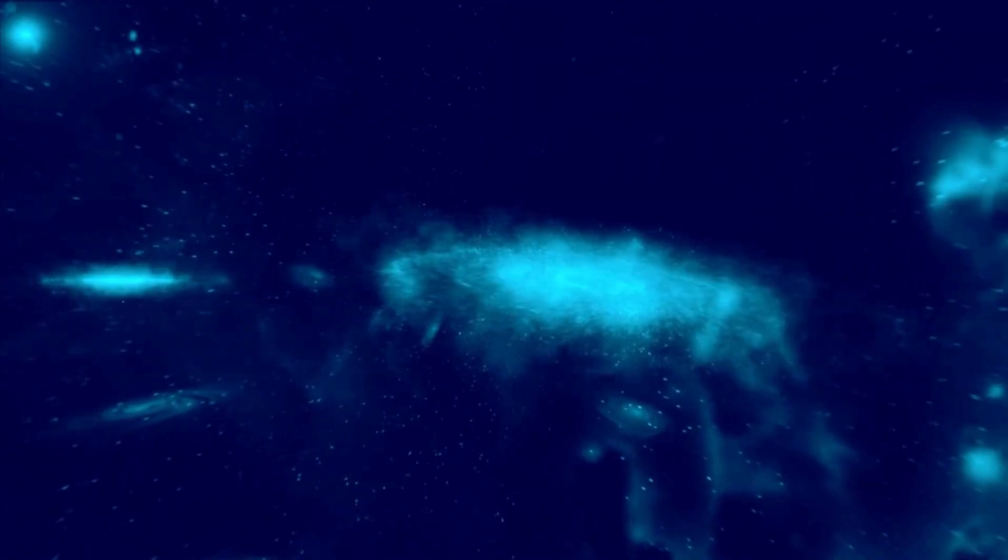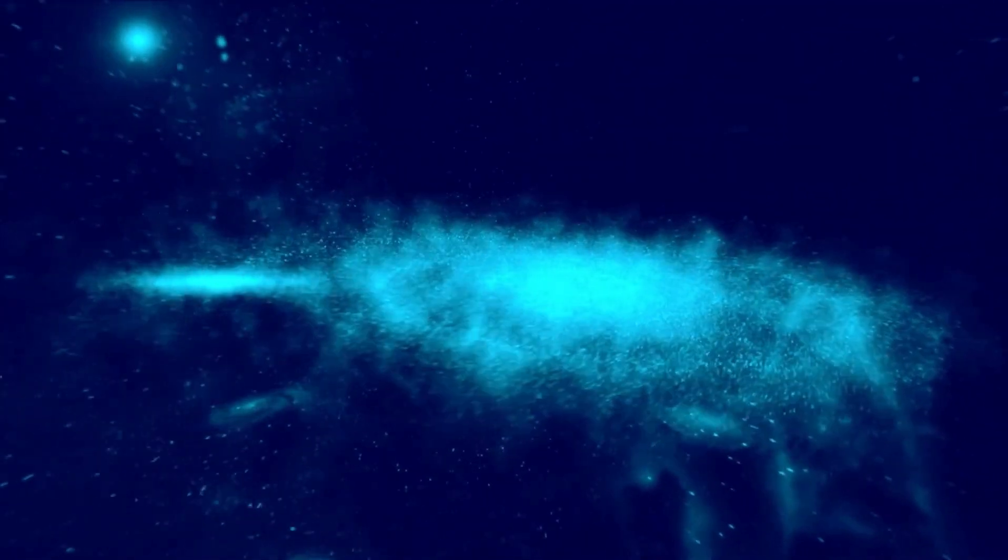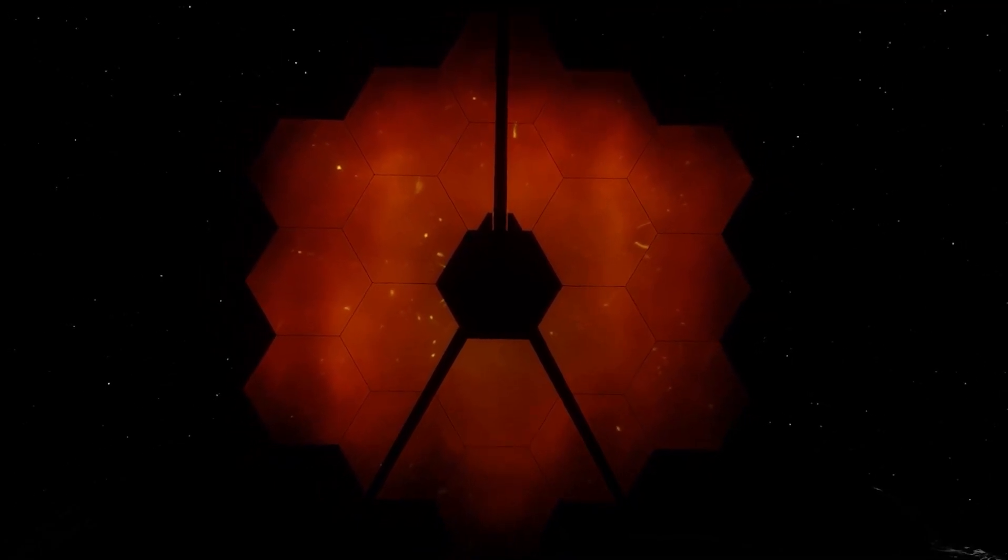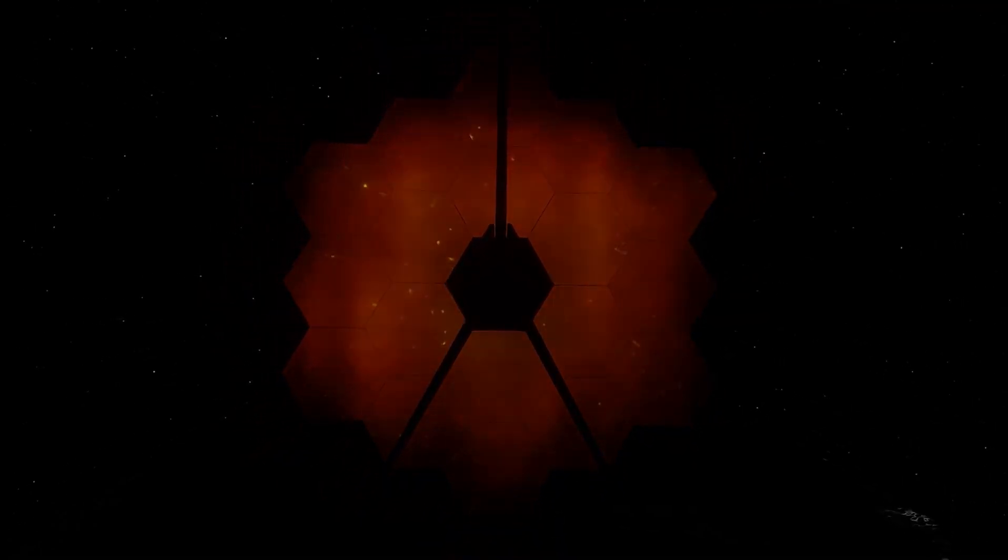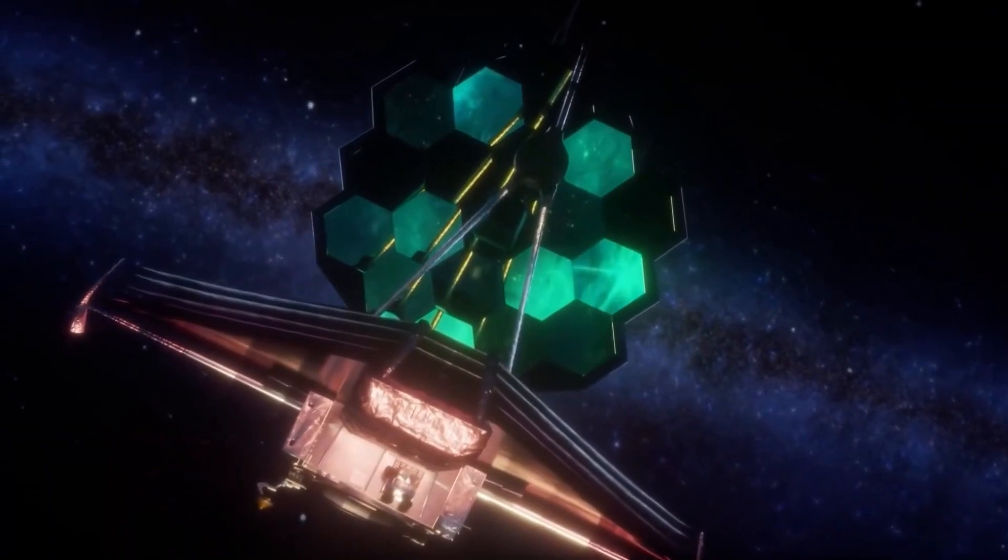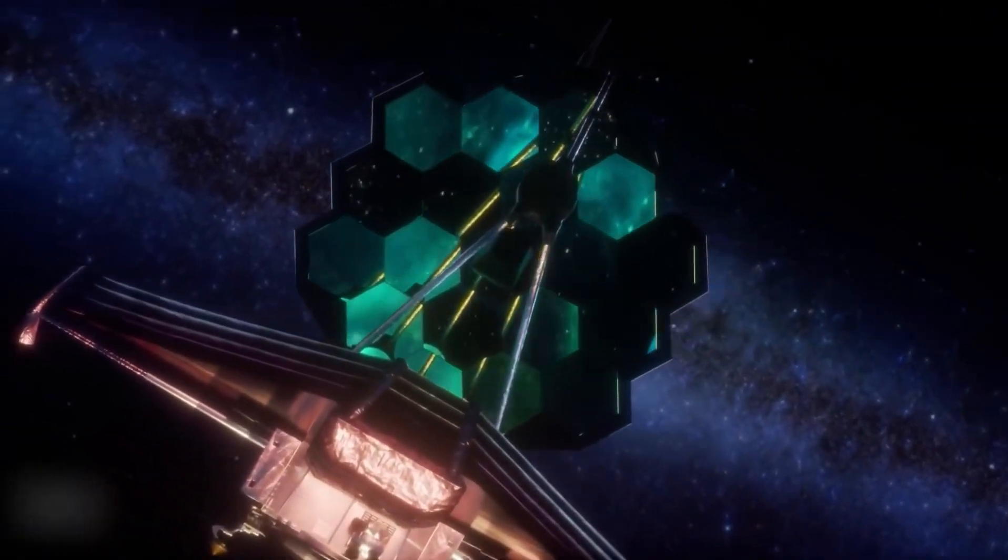But the dark matter annihilation process can't continue forever. Dark stars sit in the dark matter-rich centers of protogalaxies, which merge together continuously to form proper galaxies, and eventually, this moves dark stars away from their dark matter fuel.